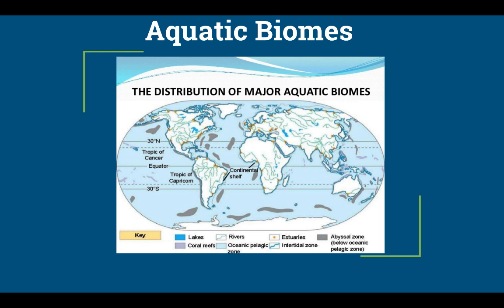Hey everyone and welcome to another AP Environmental Science lecture. Today we're going to look at aquatic biomes. Aquatic biomes are categorized differently than terrestrial biomes — we characterize them by their physical characteristics: salinity, the depth of the water, and water flow. Temperature is an important factor in determining which species can survive in a particular area, but it's not a factor used to categorize these biomes.